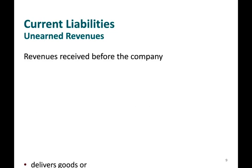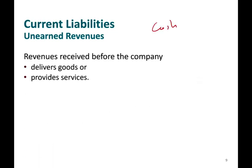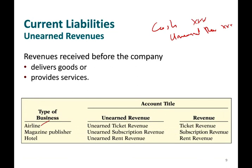Another common current liability is unearned revenue. Unearned revenue is when someone pays you up front for services you have not yet performed. This is revenue received before the company has delivered goods or services. When somebody pays you cash before you've done the work, you debit cash and credit unearned revenue. This happens with airline companies — they get your money up front but don't have revenue until you travel — as well as magazine publishers, hotels, and others.